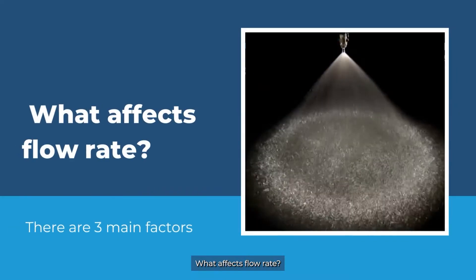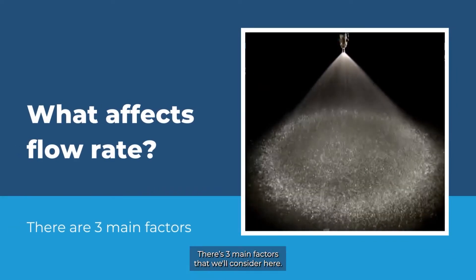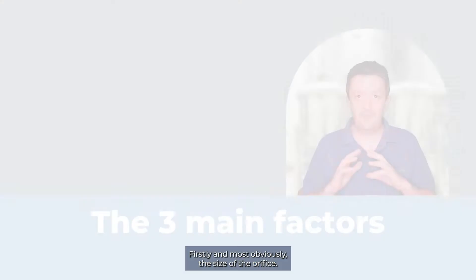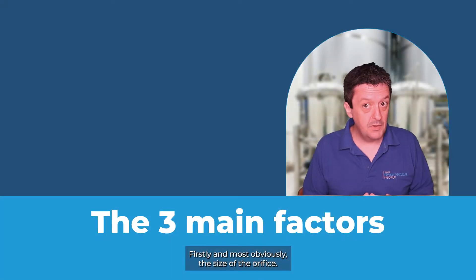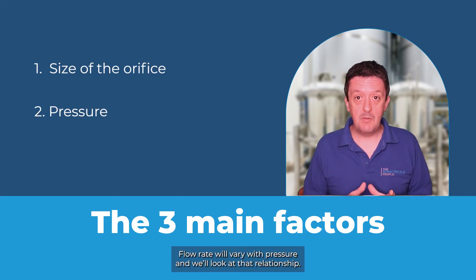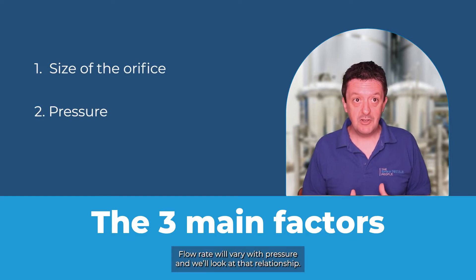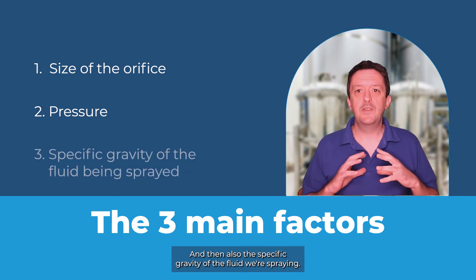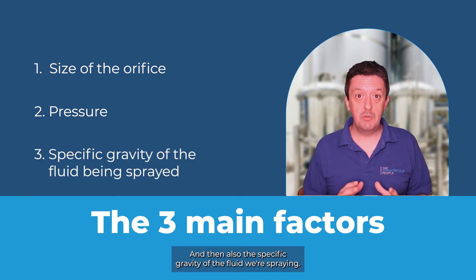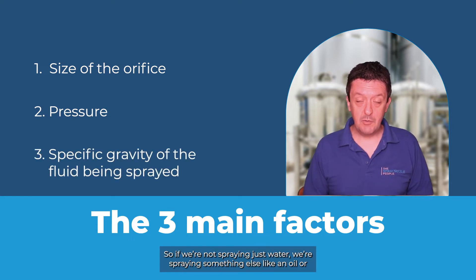What affects flow rate? There are three main factors that we'll consider here. Firstly, most obviously the size of the orifice. Then there's pressure — flow rate will vary with pressure, and we'll look at that relationship. And then also the specific gravity of the fluid we're spraying.